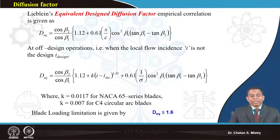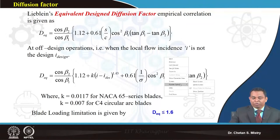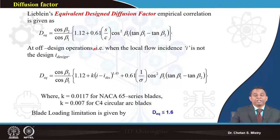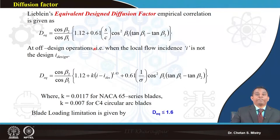Leiblin gave an equivalent design diffusion factor through an empirical correlation. This correlation is a function of beta 1 and beta 2 as well as the s/c ratio. He also considered off-design conditions - a local change of incidence angle. When the compressor is operated at a different speed than designed, the peripheral speed changes, meaning the flow does not arrive at the designed incidence angle - that is called the off-design condition.